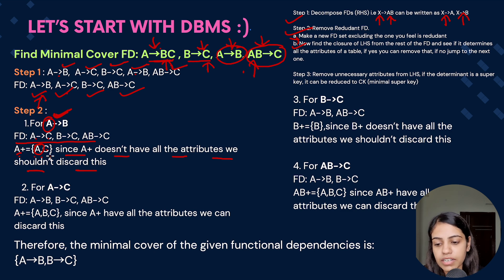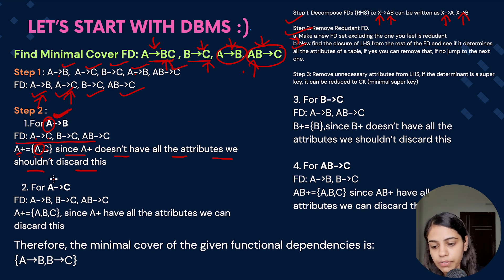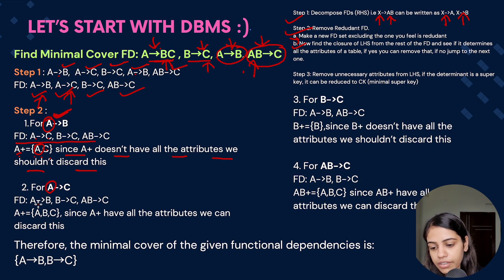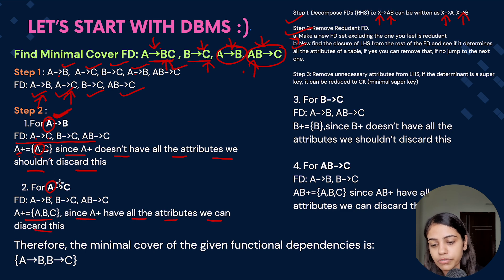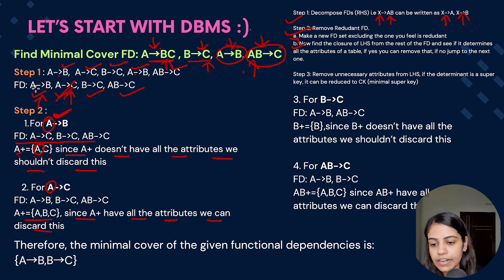Next, assume A determines C is redundant. The new set is: A determines B, B determines C, and AB determines C. We find the closure of A — A gives us A, then B, then B gives us C. So A closure now determines all attributes. Since A determines C can be derived from A determines B and B determines C, we can discard A determines C. We are now left with: A determines B, B determines C, and AB determines C.